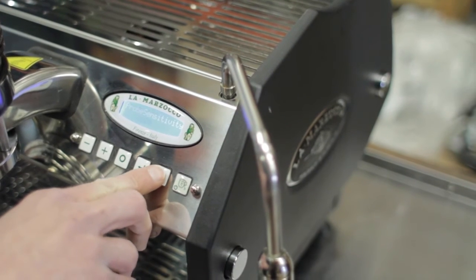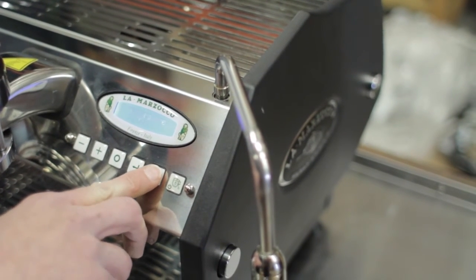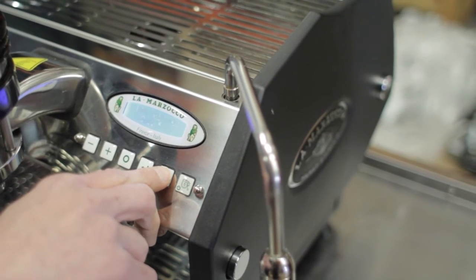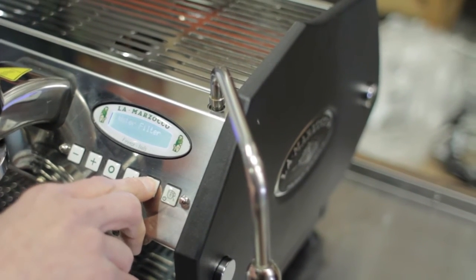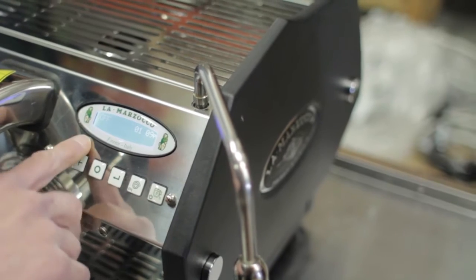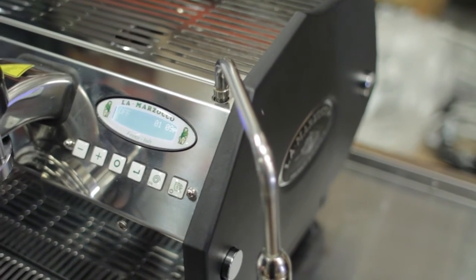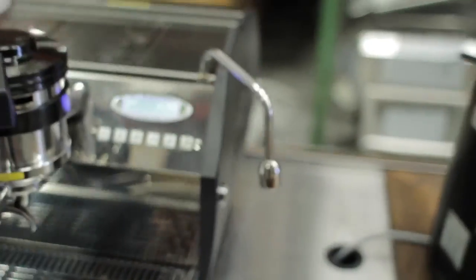So we will just cycle back through, back to the regular off setting. Now we're ready to hook up our water lines, set up our drain line, turn the water on, fill up the machine, and make some espresso. So, thanks for watching.